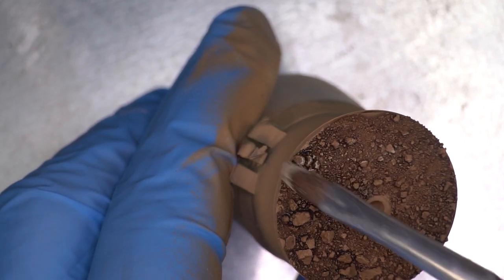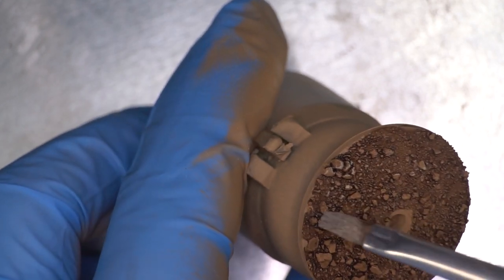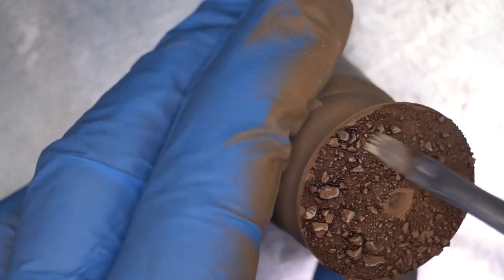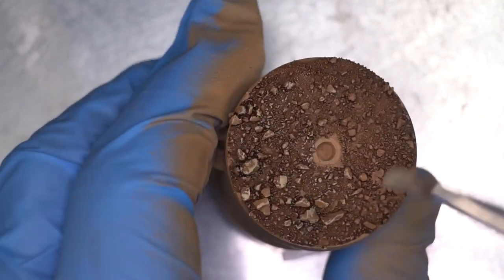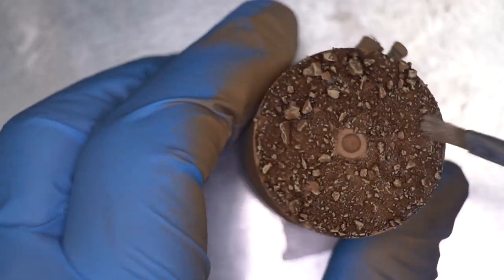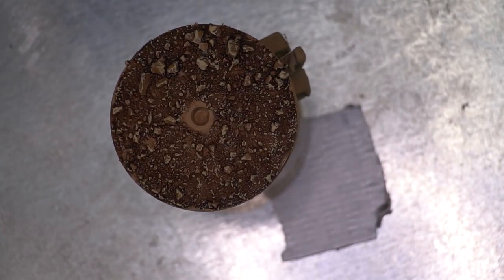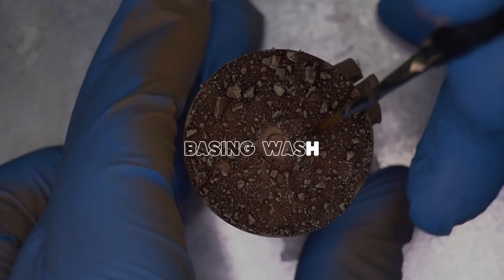Once it's dried I then go in with an Ushabti Bone highlight with a dry brush just skating the surface of the rocks making sure that this lighter paint is catching the highest surface areas of the rocks just to imply another dimension of depth to the paint job.